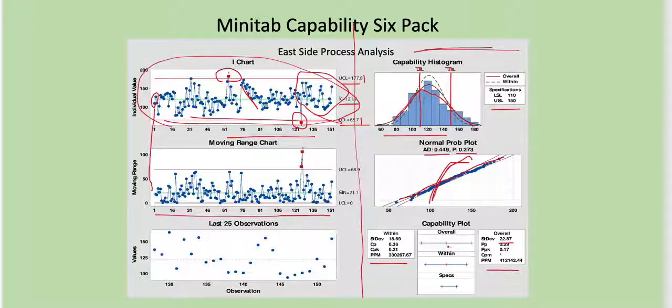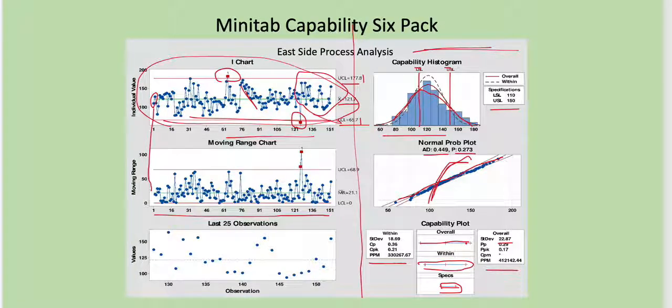There's even a little graphic here. It shows the specification limits here, and then an estimate based on within variability. So you can compare and see that using within variability measure that it's not even close to meeting specifications. And again, the overall long-term piece is even wider yet. So this process definitely has some issues with capability or meeting requirements.